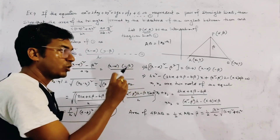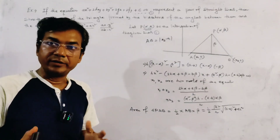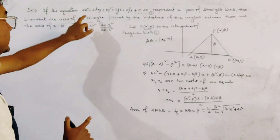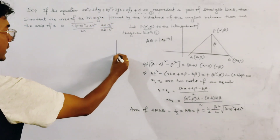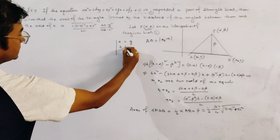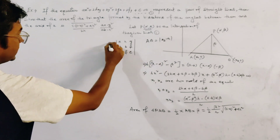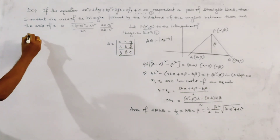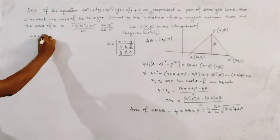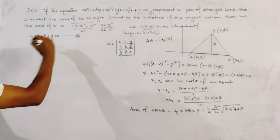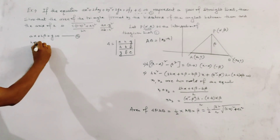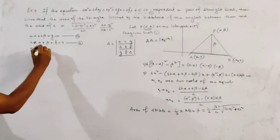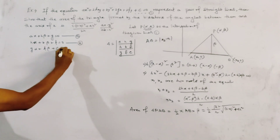To find β², we first find the point of intersection (α, β) using the determinant of the pair of straight lines, given by: Δ = |a h g; h b f; g f c| = 0. From the three rows of this determinant, we get three equations: (A) aα + hβ + g = 0, (B) hα + bβ + f = 0, and (C) gα + fβ + c = 0.